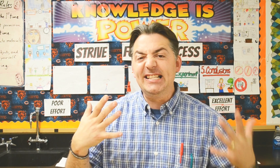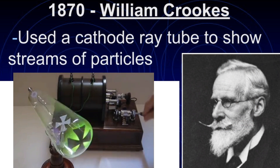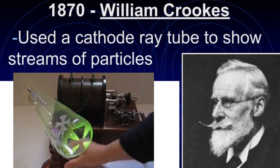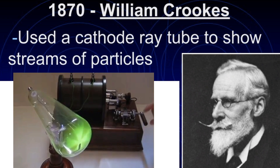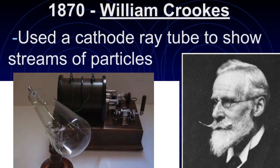Fast forward to 1870, to a guy named William Crookes. William Crookes not only had an amazing mustache, but he also ran this experiment with a tube — called a Crookes tube or cathode ray tube. What he showed was that when he put electricity through this tube, there was a stream of particles that went from one side to the other. That's an amazing thing — what are these particles?